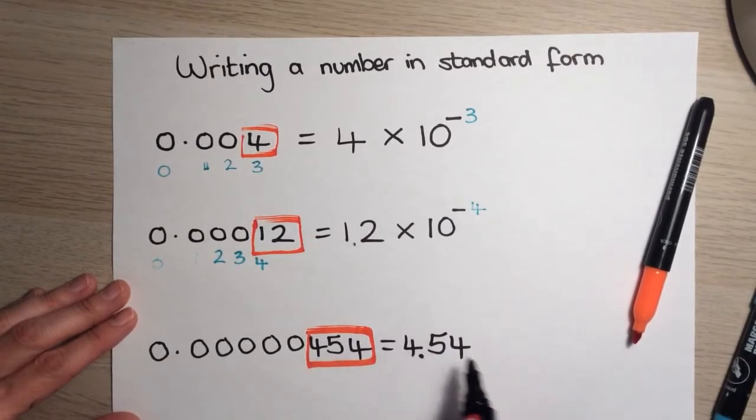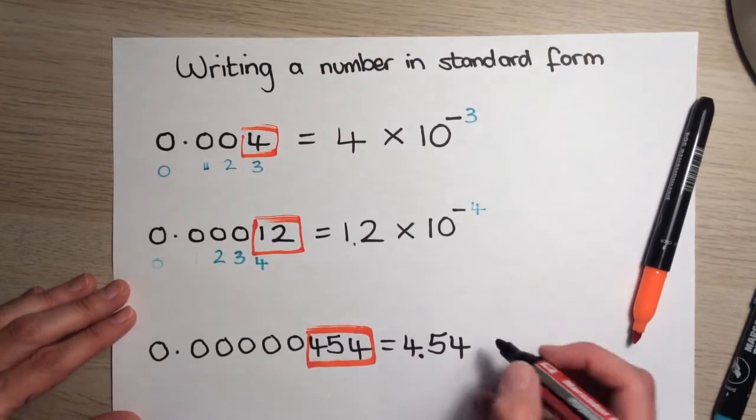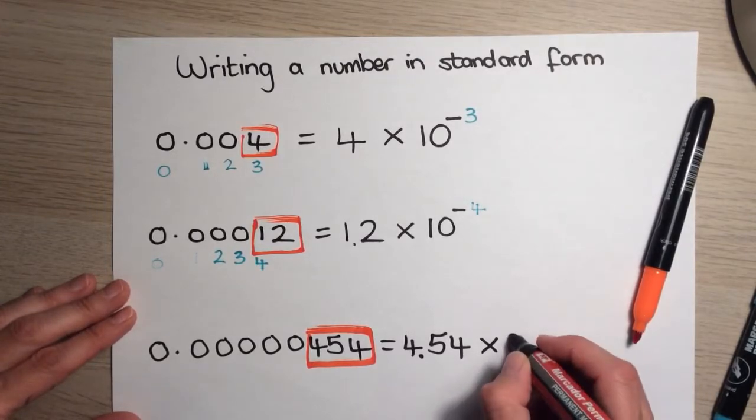I've just changed it into a number between 1 and 10. Multiply by a power of 10. Again, because the number is less than 1, it needs to be negative.